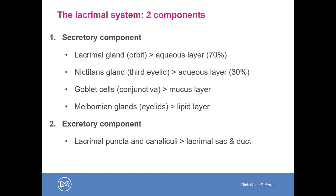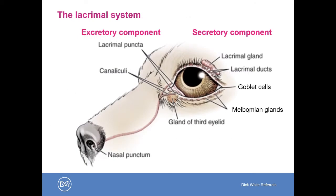The second component of the lacrimal system is the excretory component, which is arguably much less important when we talk about dry eye but is important to understand. It is composed of the openings to the tear duct system — the lacrimal puncta — which feed into the dorsal and ventral canaliculi, which then feed into a rudimentary lacrimal sac and the nasal lacrimal duct, ending in the nasal ostium or punctum.